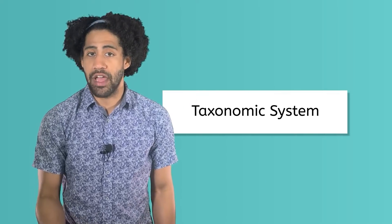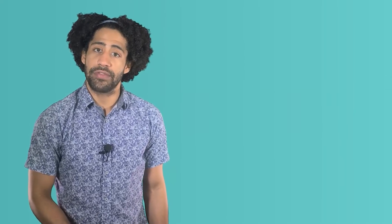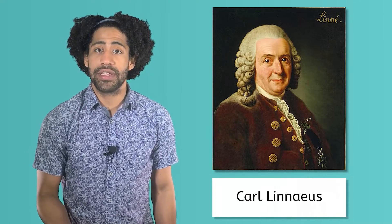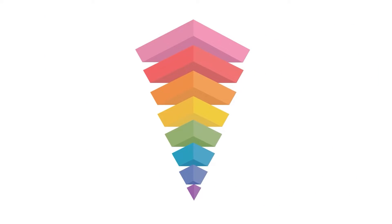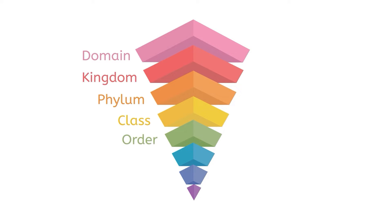It's called a taxonomic system, and it was originally developed by a Swedish scientist named Carl Linnaeus. The taxonomic system is organized like a reverse pyramid or funnel, with levels that become more and more specific as you move down. These levels, from least specific to most specific, are domain, kingdom, phylum, class, order, family, genus, and species.